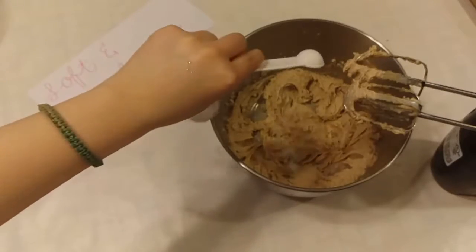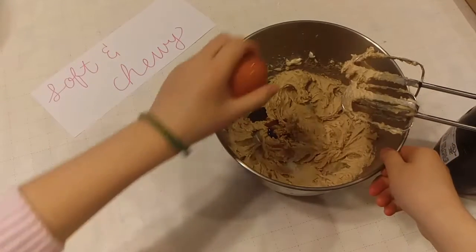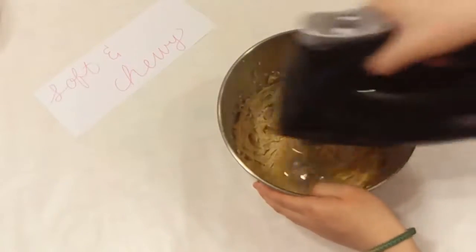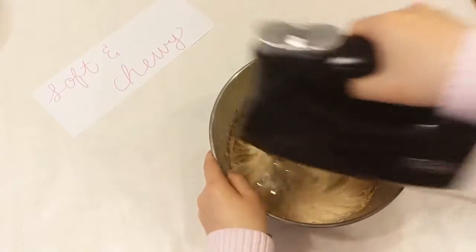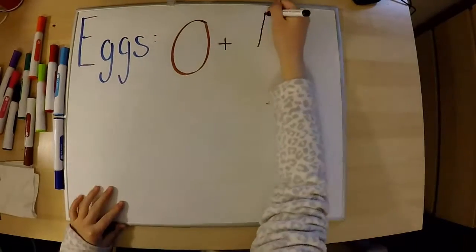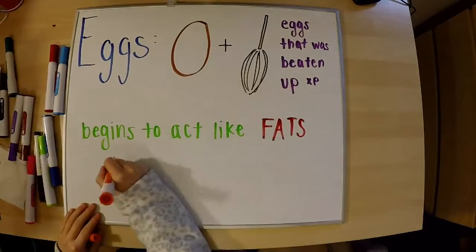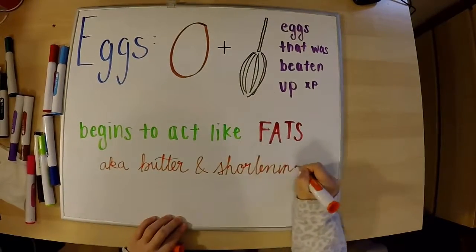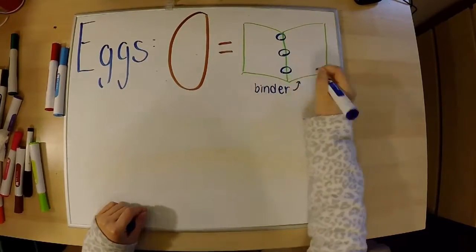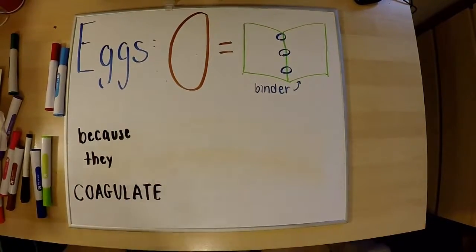Now add in half a teaspoon of salt, one teaspoon of vanilla extract, and crack in one large egg. Beat it together until combined, but don't over-beat it. Salt, vanilla, and chocolate chips are mainly used as flavoring, but eggs are a bit more complicated. When you beat eggs together, they begin to act like fats — butter and shortening — taking over their job a little. Eggs act like binders because they bind everything together, just like your binder, and it's because they coagulate.